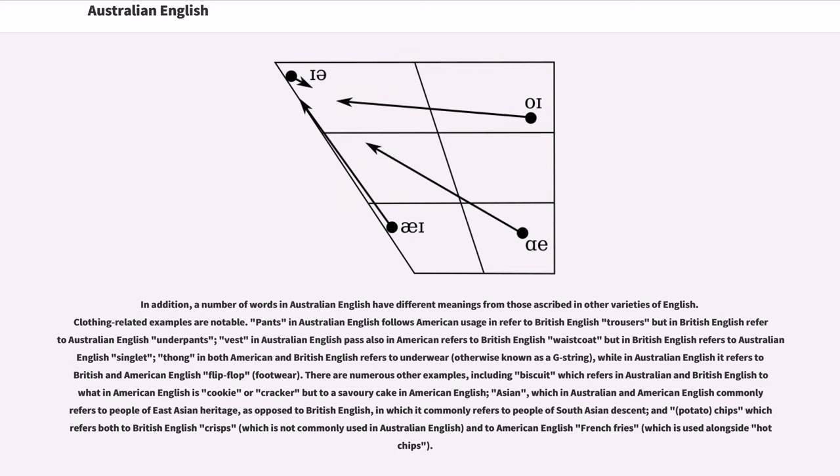A number of words in Australian English have different meanings from those ascribed in other varieties of English. Clothing-related examples are notable. Pants in Australian English follows American usage and refers to British English trousers but in British English refers to Australian English underpants. Vest in Australian English, as also in American, refers to British English waistcoat but in British English refers to Australian English singlet. Thong in both American and British English refers to underwear, otherwise known as a g-string, while in Australian English it refers to British and American English flip-flop footwear.